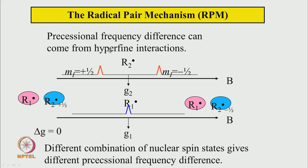We now introduce the role of hyperfine interaction. Suppose radical 1 has no hyperfine splitting and appears at g = G1, while radical 2 has the same g-value but has one spin-1/2 nucleus, giving a doublet. The magnetic field axis is also a frequency axis, so the difference between the center of radical 1 and each line of radical 2 represents a precessional frequency difference. The sign of that difference depends on the nuclear spin state — +1/2 gives one sign, −1/2 gives the opposite.